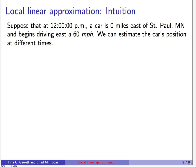To help you build some intuition behind this, I want to start with an example. Suppose that at noon — so that's 12 hours, 0 minutes, and 0 seconds into the day — a car is 0 miles east of St. Paul, Minnesota, and begins driving east at 60 miles per hour. What we can try to do is estimate the car's position at different times.